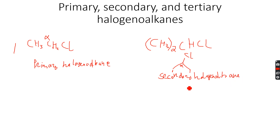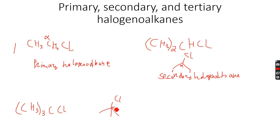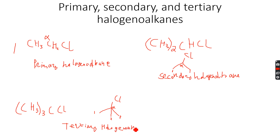A secondary halogenoalkane has an alpha carbon attached to two other carbons. When you have (CH3)3CCl, the alpha carbon atom is attached to one, two, and three carbon atoms. So when the alpha carbon is attached to three different carbon atoms, this is called a tertiary halogenoalkane.